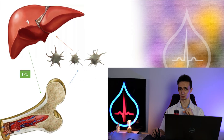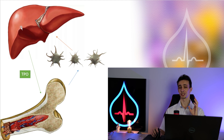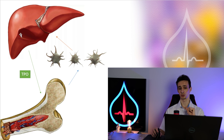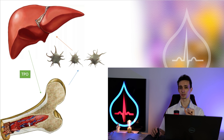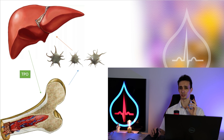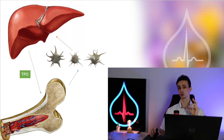Dear friends, this is the liver. The liver is the place where the special hormone thrombopoietin is synthesized. It goes into the blood and then it stimulates special stem cells in the bone marrow — these are megakaryocytes — that will produce thrombocytes. Thrombocytes are special blood particles that function to stop bleeding and to minimize damage to the blood vessels.